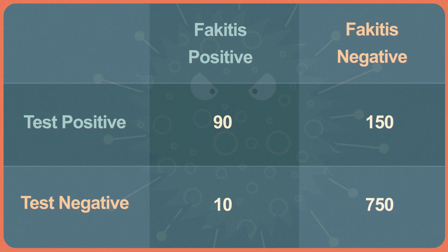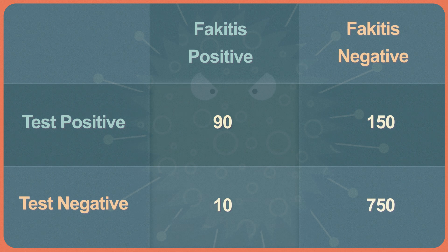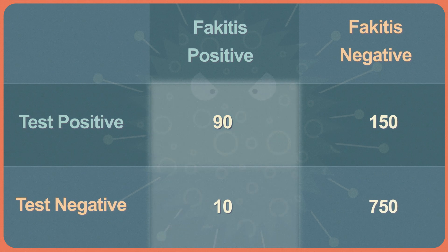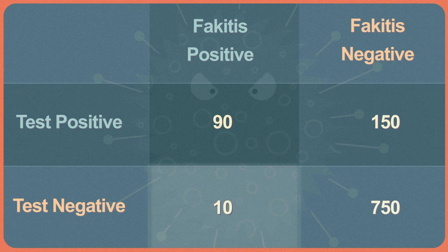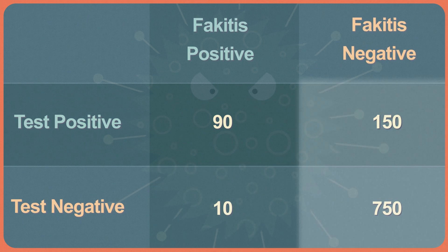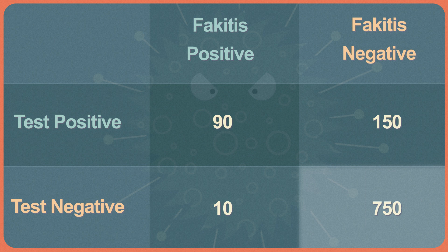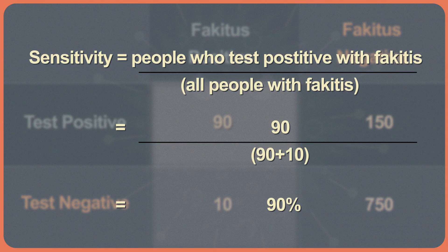Let's fill in the diagram with some real numbers. The researchers gathered 1,000 people. It turns out that 100 of them have fake-itis. Of these people, 90 have a positive test and 10 have a negative test. There are 900 people without the disease, and of them 750 had a negative test and 150 have a positive test. Sensitivity is the proportion of people who have fake-itis who have a positive test. 100 people total have fake-itis, 90 of them have a positive test, so the sensitivity is 90 over 100, or 90%.